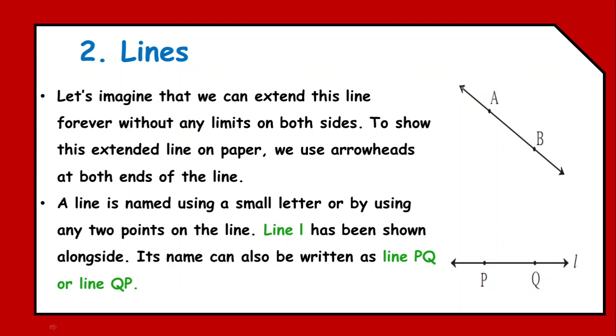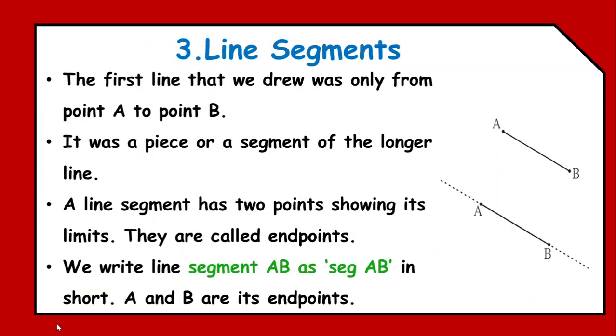This arrow shows that you can extend or expand the line beyond the limits. And while labeling the line, we can simply make use of a small letter. Like, here we have written it as line L. Or simply you can read it as line PQ, where P and Q are the endpoints.